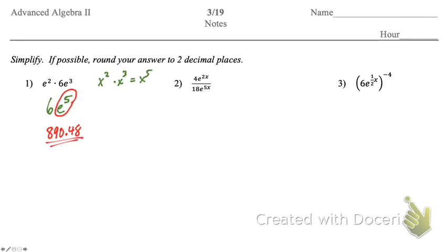Simplifying. We can just act like those are regular variables there. The 4 over 18, we can divide by 2 and get 2 9ths. When we divide, we subtract. We'd have two options here. We could subtract 2x minus 5x and get negative 3x, or we could subtract 5x minus 2x and get positive 3x. We want to avoid that negative if we can, so we need to use positive 3x. 5x is bigger than 2x, and it's on the bottom, so our E to the 3x needs to go into our denominator.